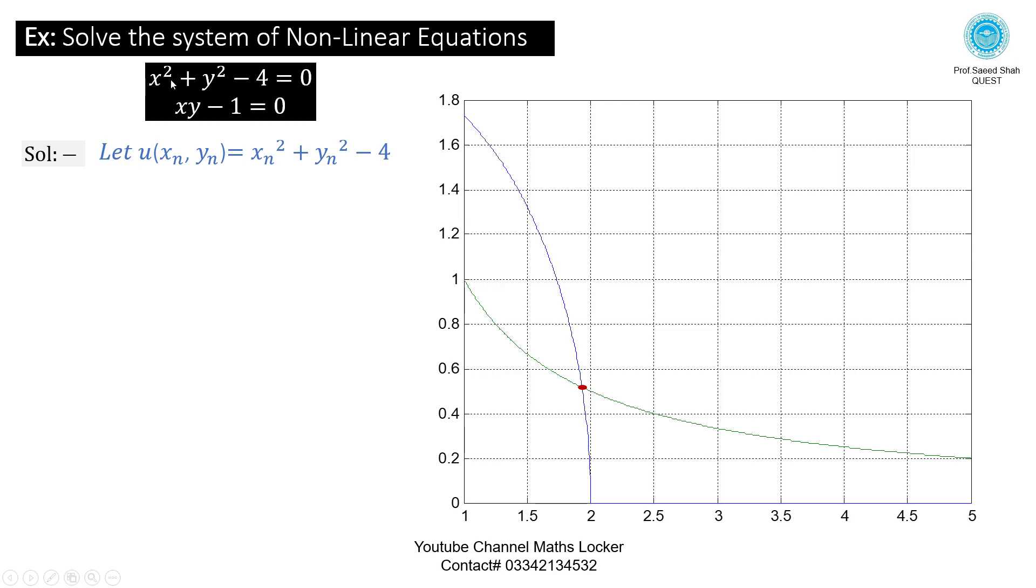Let U is equal to Xn square plus Yn square minus 4, replacing in first equation X by Xn and Y by Yn. And V is equal to Xn Yn minus 1, replacing X by Xn, Y by Yn in the second equation.